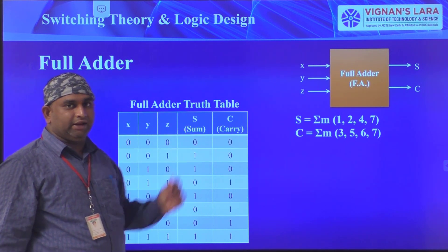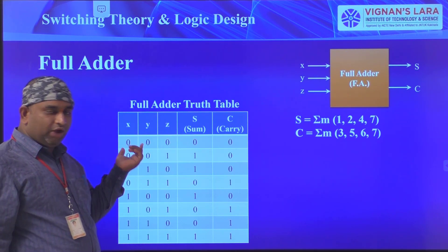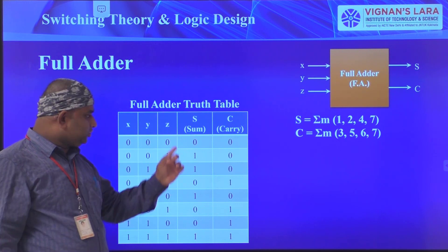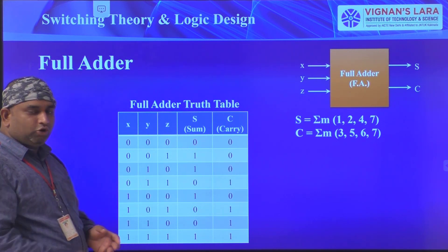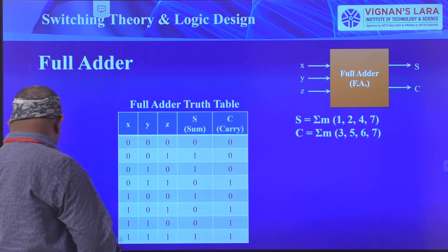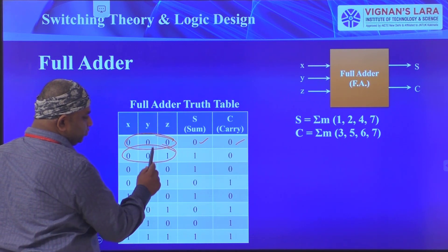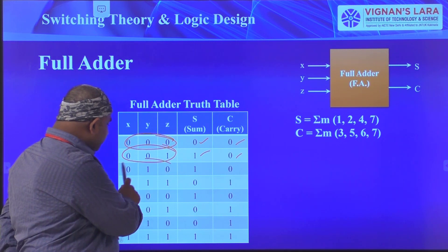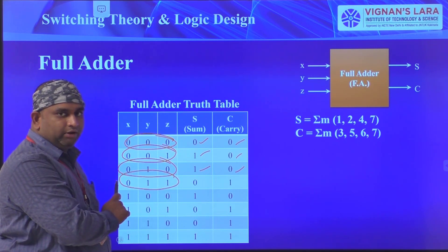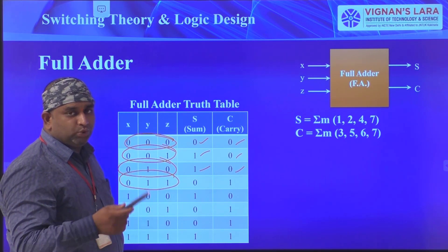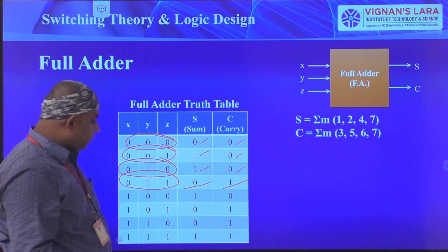Coming to the full adder truth table with three inputs x, y, z and outputs sum and carry: 0+0+0 gives sum=0, carry=0. 0+0+1 gives sum=1, carry=0. 0+1+0 gives sum=1, carry=0. 0+1+1 equals 2, so sum=0 and carry=1 — this is a very important case. 1+0+0 gives sum=1, carry=0.